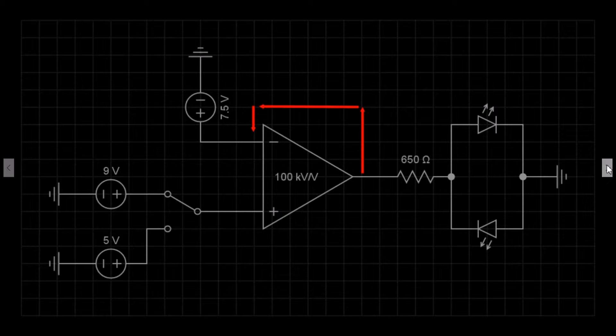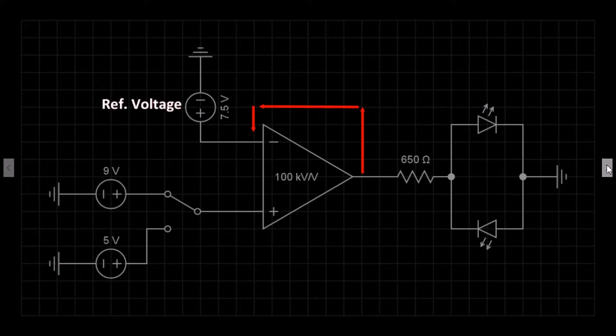We have a 7.5 volt power supply connected to the non-inverting input of the op-amp. This is the reference voltage. This is the minimum operating voltage point for the circuit.